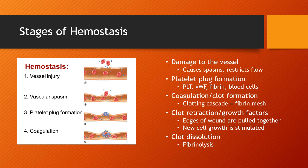Hemostasis is the process of stopping bleeding and this occurs in five steps. First, there's damage to the vessel, which causes the release of plasma and red and white cells into the surrounding tissues. This causes a chemical reaction which causes the vessel to spasm for about an hour and restricts blood flow. When blood flow is restricted and slows down, the body is able to form a platelet plug. There's a spasm and then platelet plug formation where platelets, von Willebrand's factor, fibrin, and blood cells come together.